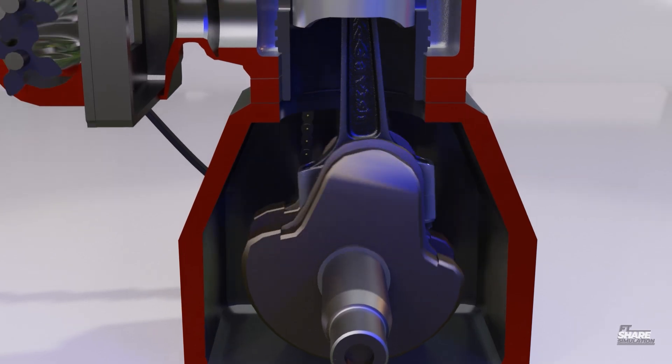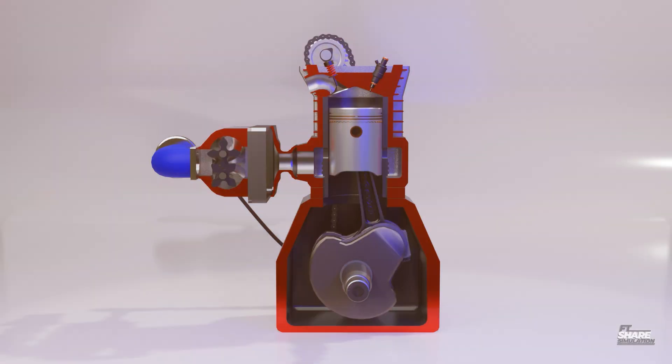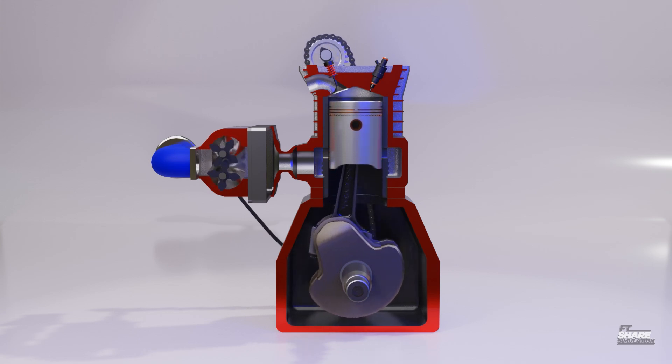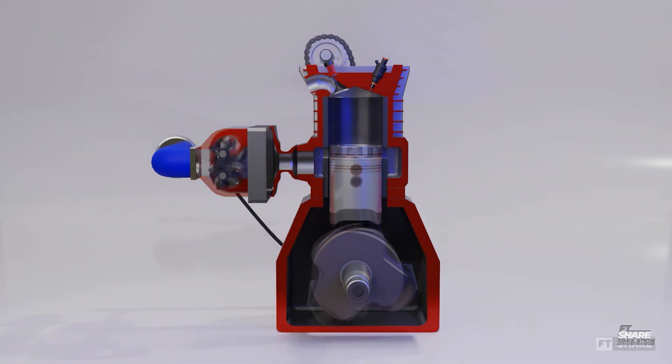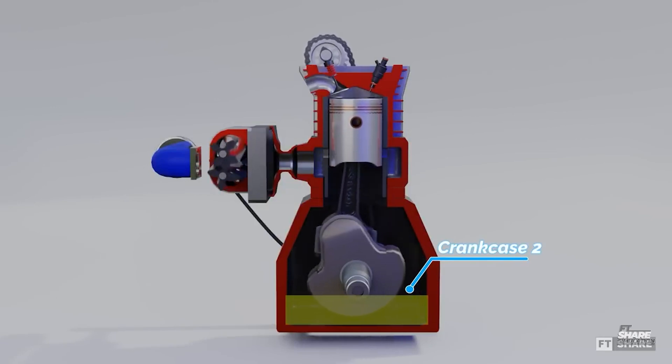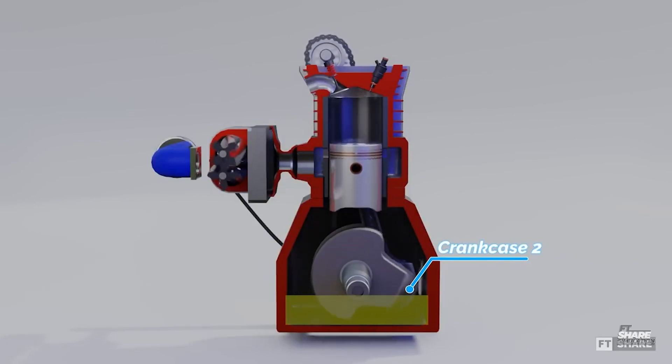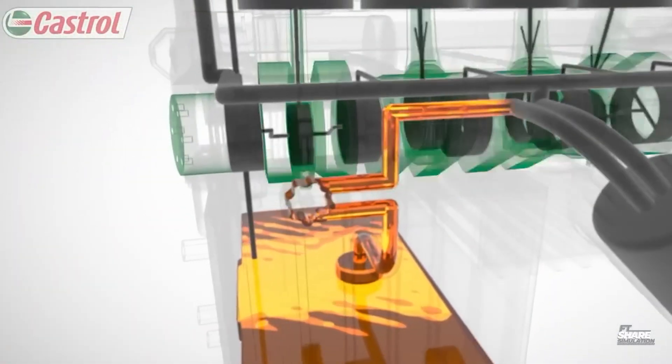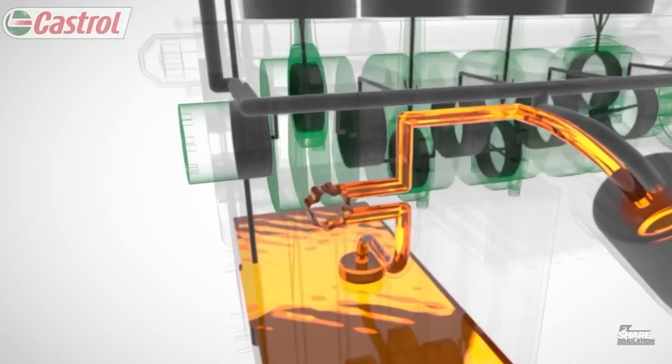You might be wondering about the lubrication process. In a two-stroke diesel engine, the lubrication process is almost the same as in a four-stroke engine. Since the crankcase isn't responsible for supplying air, the crankcase space can be used to store oil.